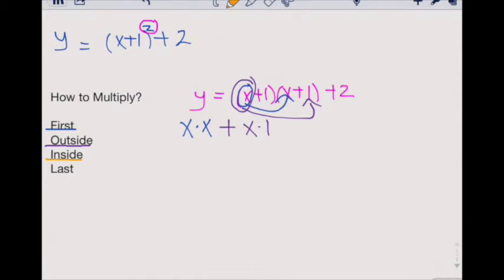Inside tells us to take the second element in our first quantity and multiply the first element in our second quantity, i.e., the two inside-most terms. In this case, we'll once again get x times one.